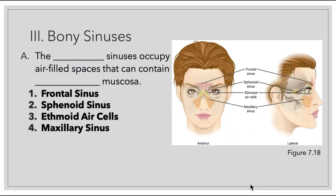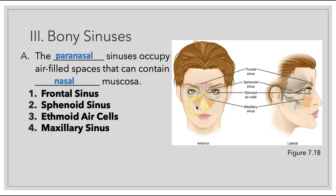Now let's talk about the bony sinuses of the skull, also called paranasal sinuses — para meaning surrounding. A sinus is a space within the bone that contains nasal mucosa. First we have our frontal sinus — if you feel tenderness between your eyebrows, you might be having sensitivity there. Then we have the sphenoid sinus, found just inferior to the sella turcica where your pituitary gland sits. Then we have the ethmoidal sinus or ethmoidal air cells, located around the nose near the orbits. Lastly, the largest sinus of all is the maxillary sinus, found in close relation to the upper teeth.